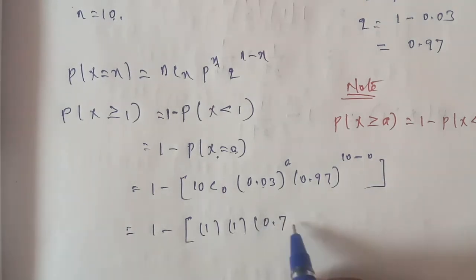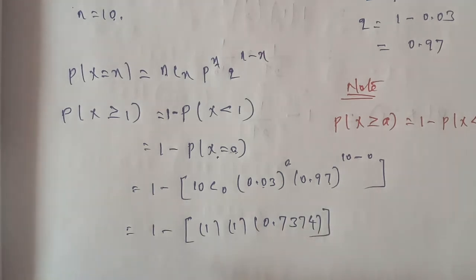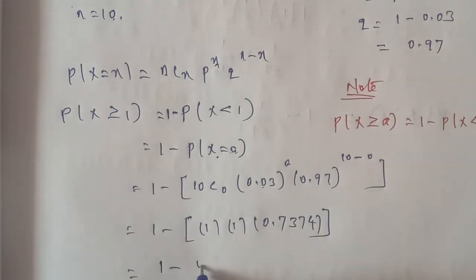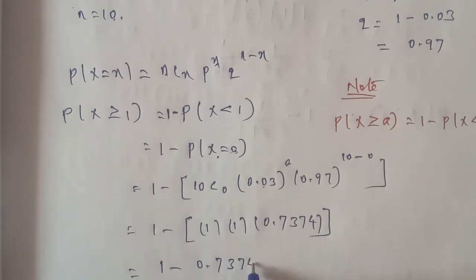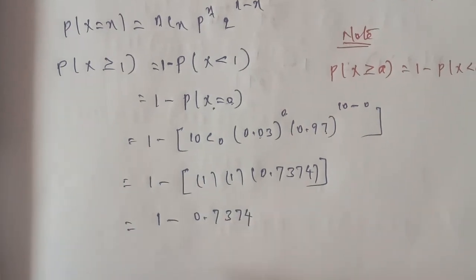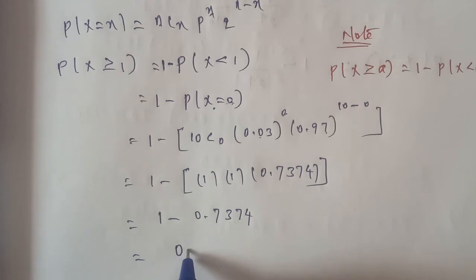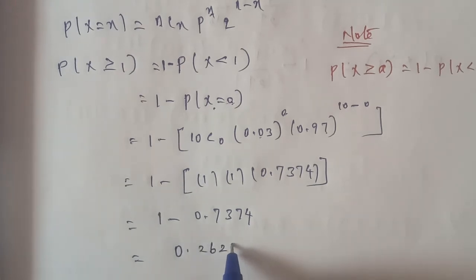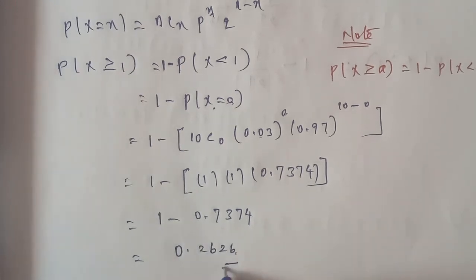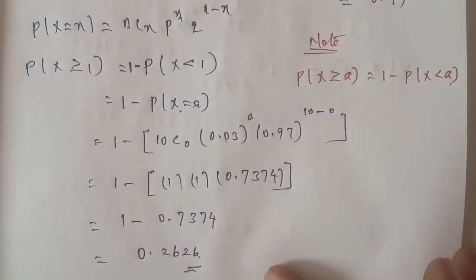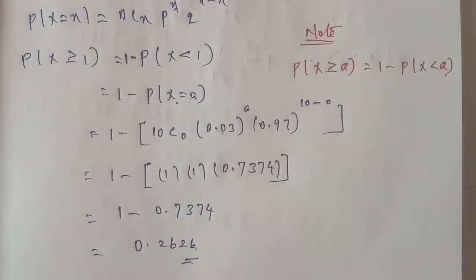The answer is 1 minus 0.7374, which equals 0.2626. So the probability that at least 1 patient will have a side effect is 0.2626. Thank you students.